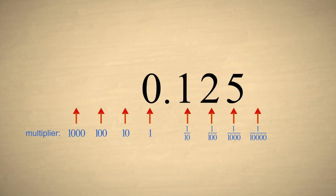If we multiply this number by ten, each digit is shifted one column to the left.